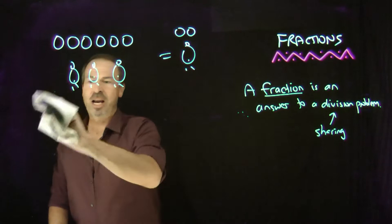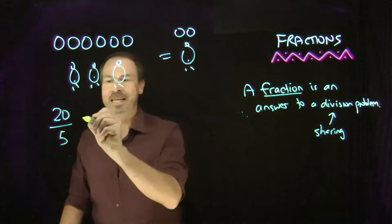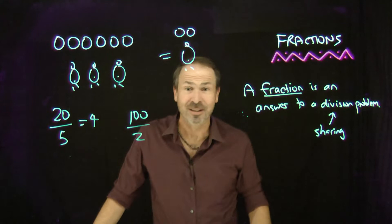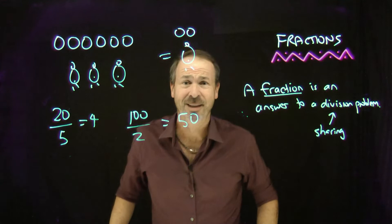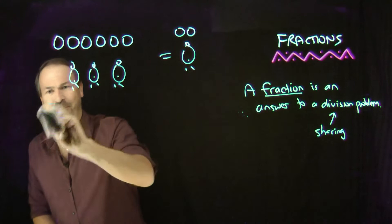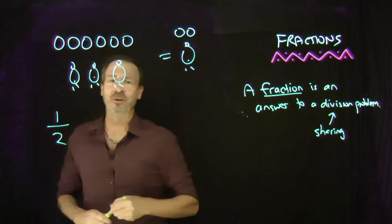So a fraction is an answer to a division problem. And in this model, sharing pies equally among students. The number of pies per number of students gives a certain amount of pie per student. Now, I don't think I need to draw the picture for this one, but I can bet you can see in your mind's eye, if I change the numbers to say 20 pies to be shared equally among five students, that would yield four pies per student. Or 100 pies shared equally among two students would yield 50 pies per student. That's all a fraction is.